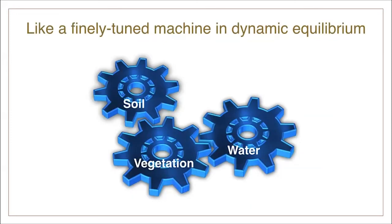A river and its riparian area work like a finely tuned machine, where the soil, water, and vegetation all work together. If any of these components are damaged, the equilibrium will be disrupted. In Lesson 5, we'll learn more about that.